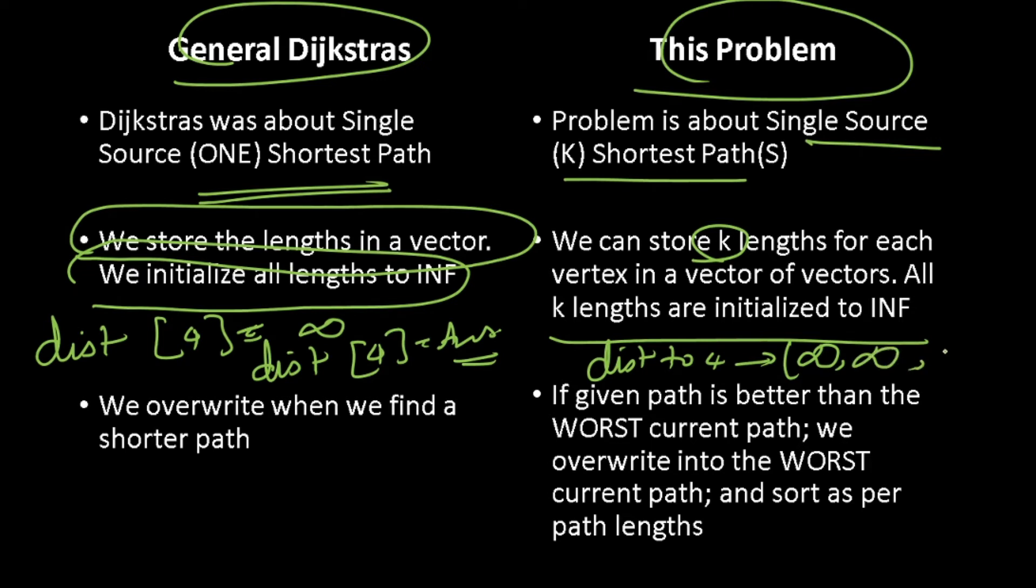The second best path is also infinity, the third best path is also infinity and the kth path is also infinity. That's how I will be storing things and then I will use Dijkstra's.